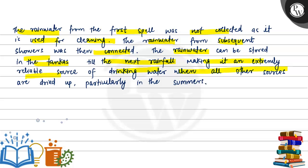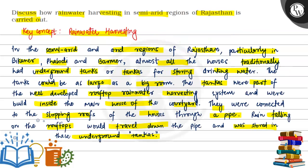This makes it particularly useful when all other sources are dried up, especially in summer. So in Rajasthan's semi-arid areas, especially Bikaner, Phalodi, and Barmer, there are tanks available in each house.